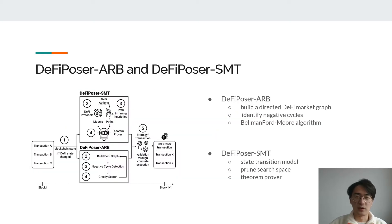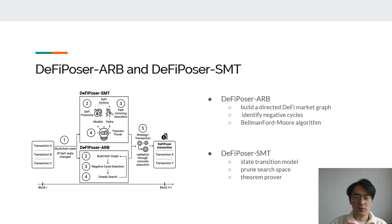Therefore, we propose a framework called DeFi Poser that allows us to efficiently identify profitable transactions given the blockchain state. We propose two methodologies: DeFi Poser ARB, where we build a directed DeFi market graph and identify negative cycles using the Bellman-Ford algorithm, which can be turned into profitable transactions; and DeFi Poser SMT, where we formulate DeFi actions into symbolic state transition models, set a target profit for a sequence of DeFi actions called a path, and use a theorem prover to determine if such paths can be profitable and find the corresponding parameters.